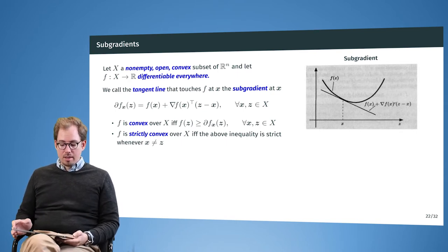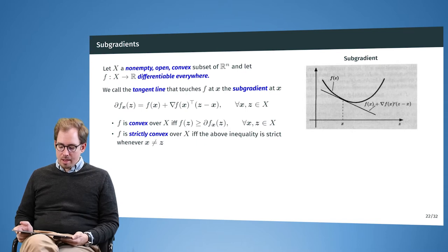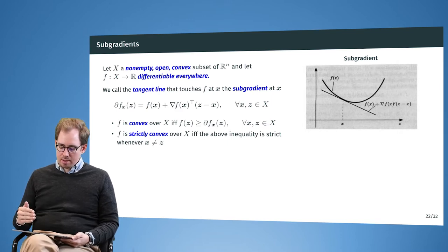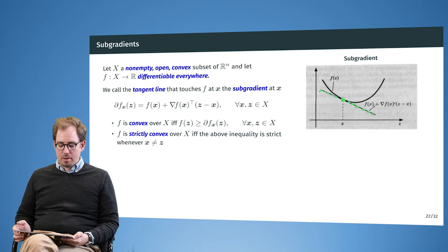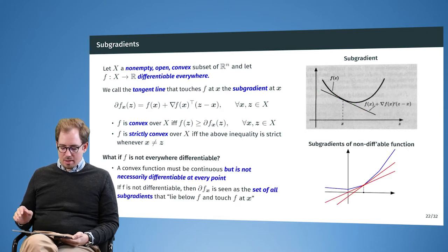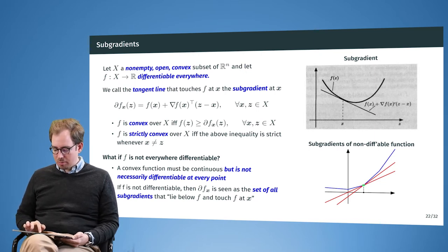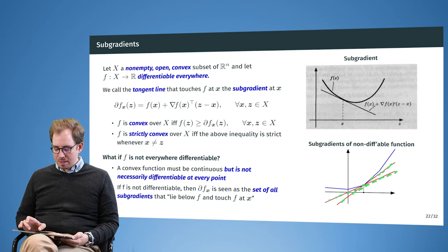Subgradients are a notation that will appear several times, so we introduce it here. If we select a point x and draw the tangent line in the direction of the gradient, we get the so-called subgradient. If f is convex, the function always lies above the subgradient. If f is not everywhere differentiable, there can be a whole set of subgradients at a point, all satisfying the condition that they lie below the function everywhere.